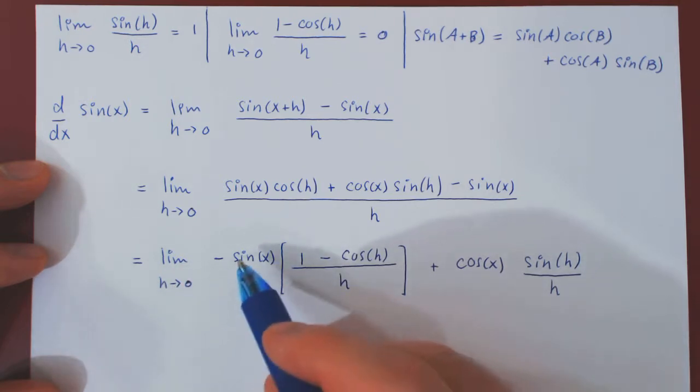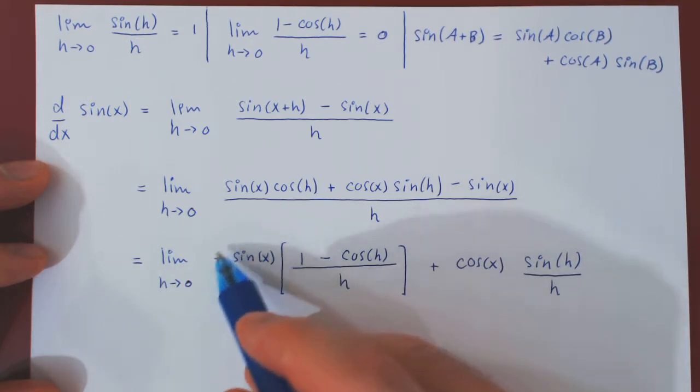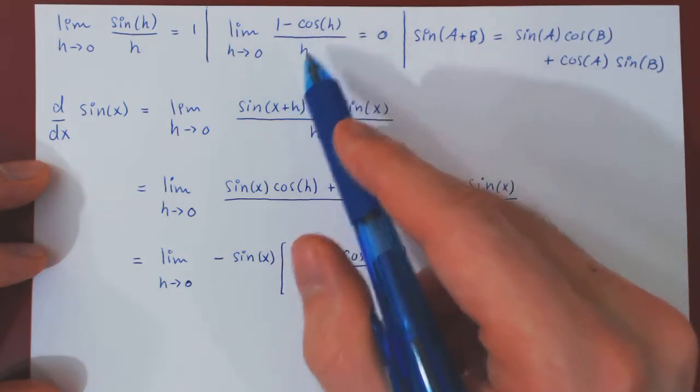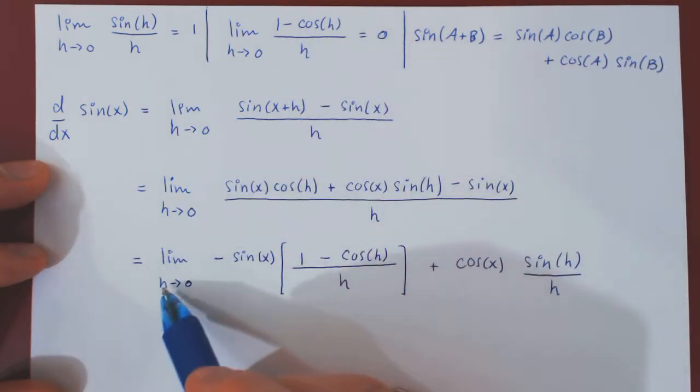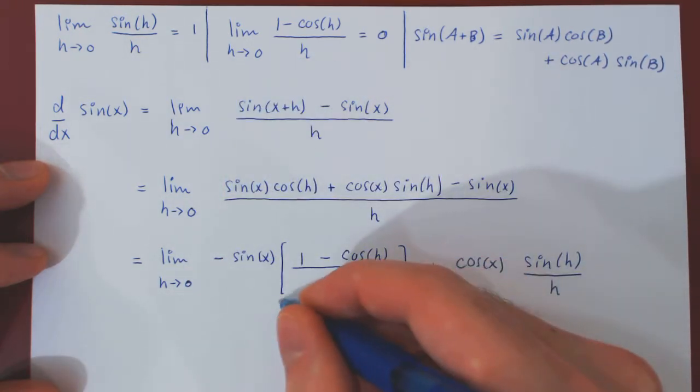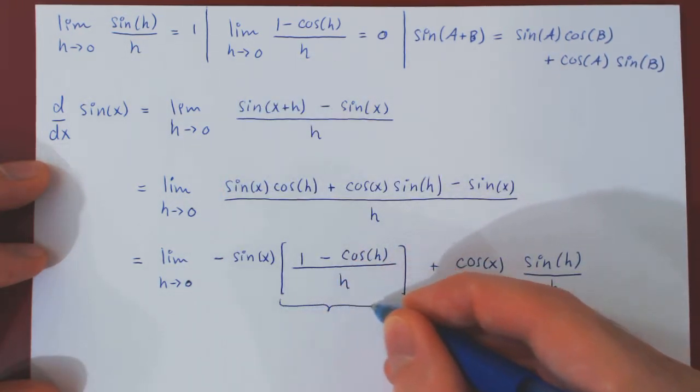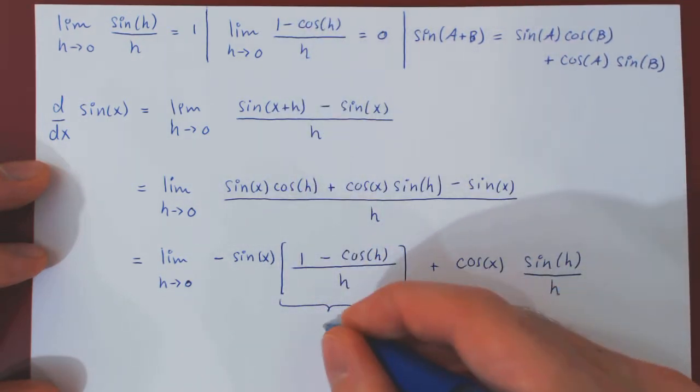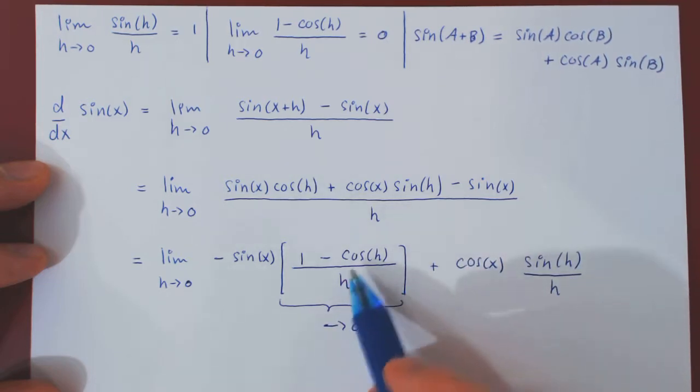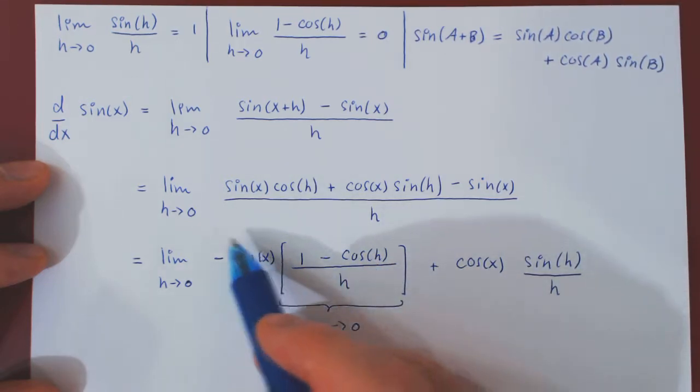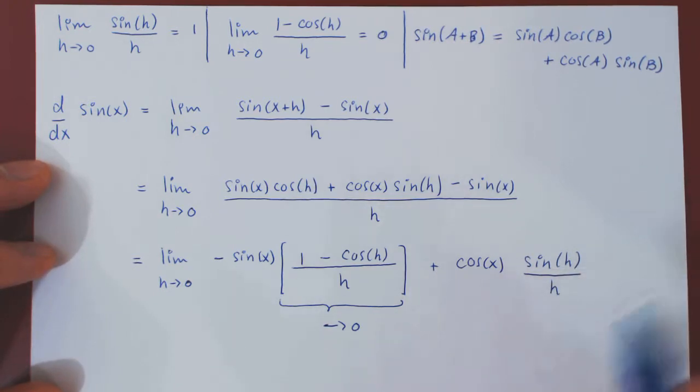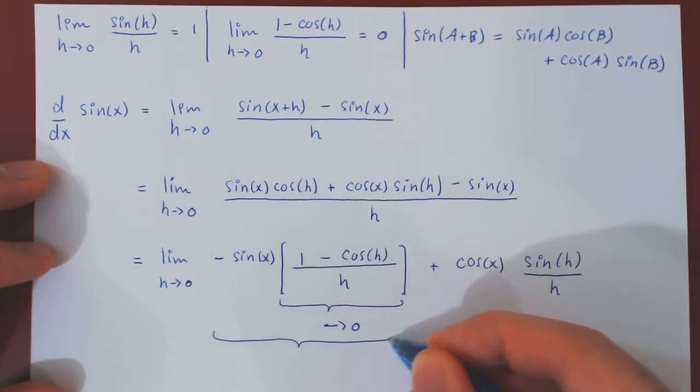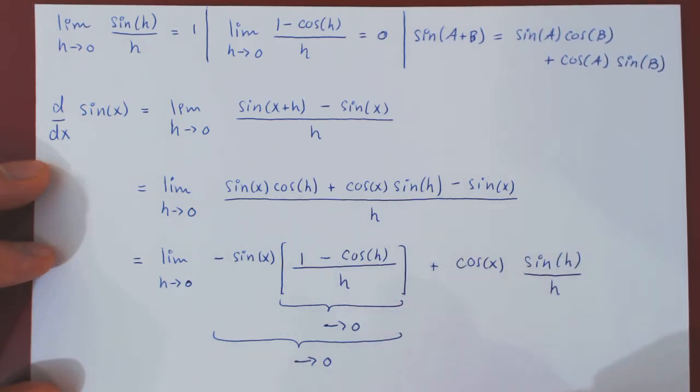With respect to h, sin of x is a constant. It does not depend on h. And look at the second term, 1 minus cos of h over h, as h is approaching 0. So, we already know that as h approaches 0, 1 minus cos of h over h approaches 0. 0 times negative sin of x will also be approaching 0. So, the first term is shrinking to 0.